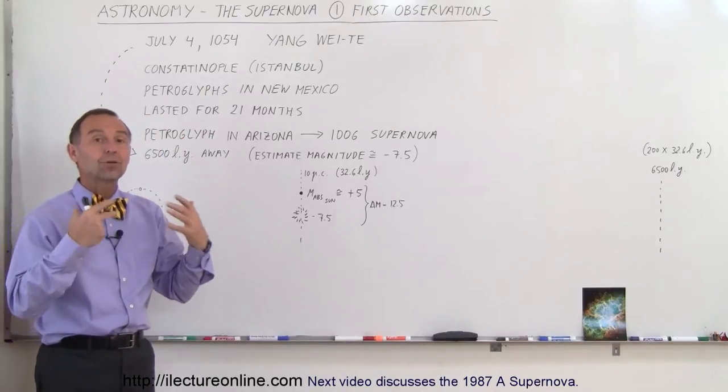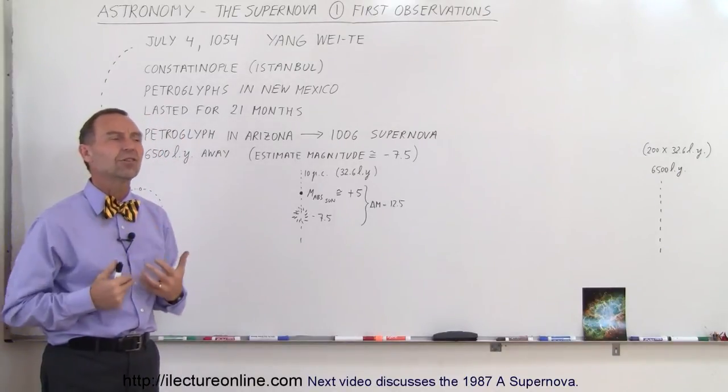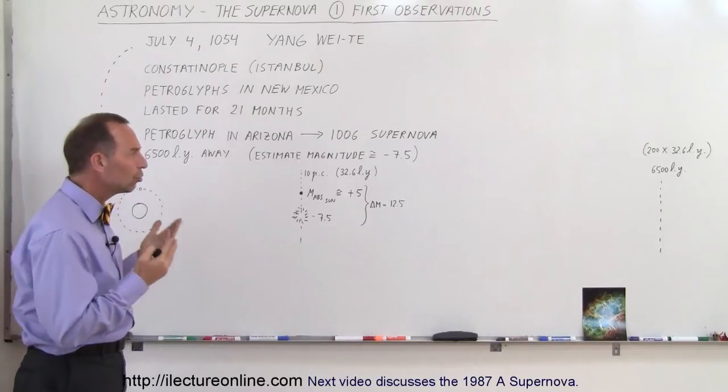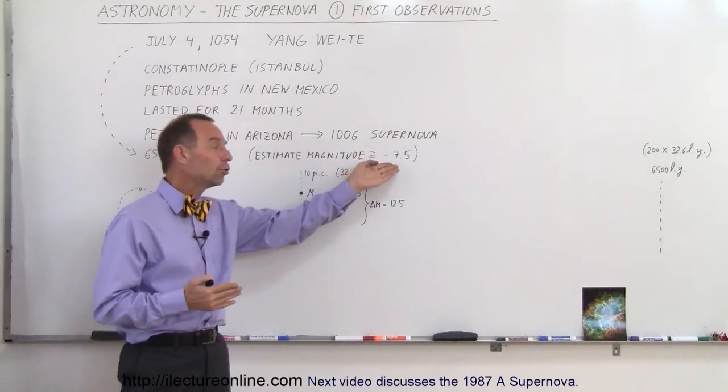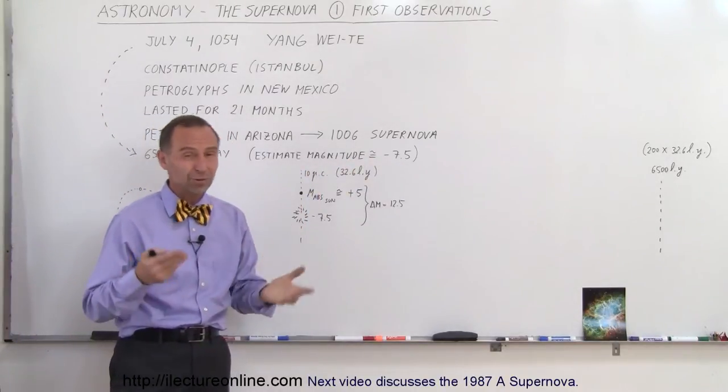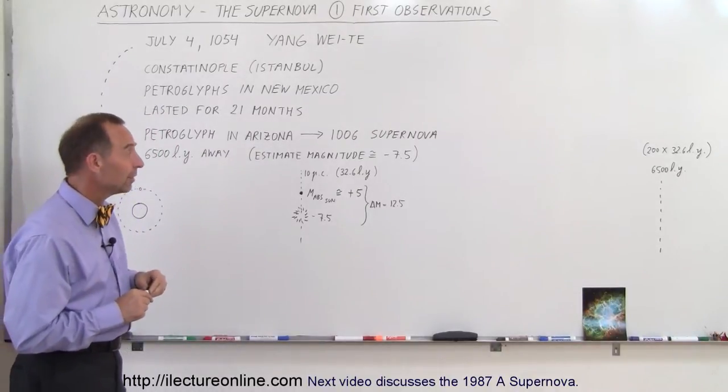Well first of all, it became so bright that it looked brighter than Venus in the sky. And so let's assume that it had about an estimated magnitude of minus 7.5, which puts it about 10 to 20 times brighter than Venus.